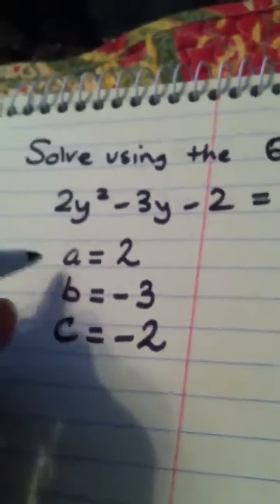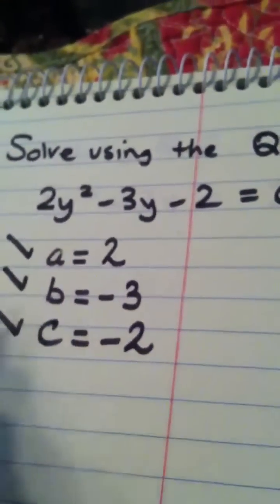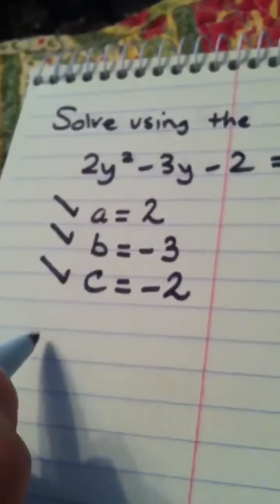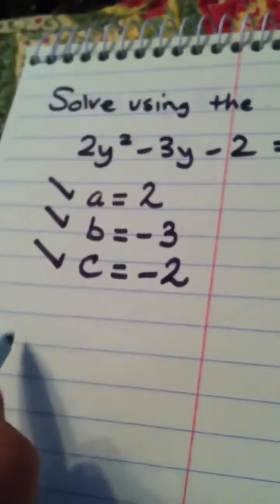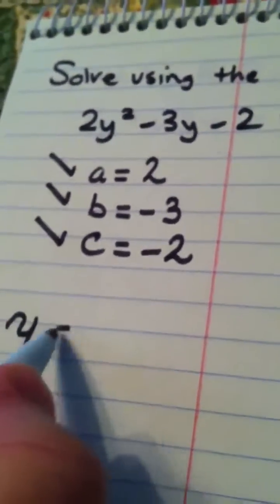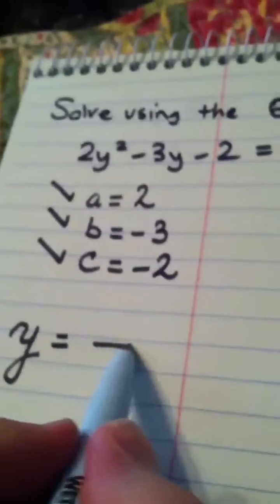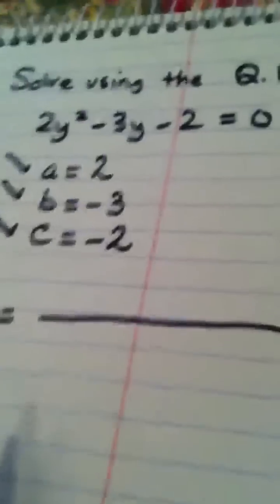Okay? So write down A, B, and C. When I plug into the formula, my answer here is not x, it's y equals, I like you to draw the division bar all the way across.